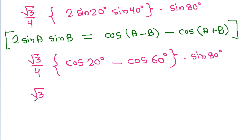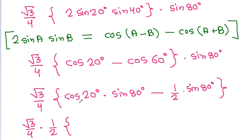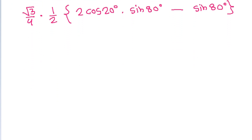Expanding: cos 20° × sin 80° − cos 60° × sin 80°, where cos 60° = 1/2. So it becomes √3/4 times (cos 20° × sin 80° − (1/2) sin 80°). Taking 1/2 as common gives √3/4 × 1/2, which is √3/8, times (2 cos 20° × sin 80° − sin 80°).